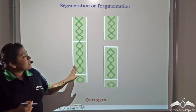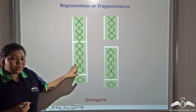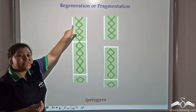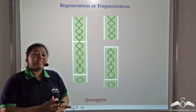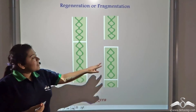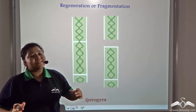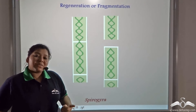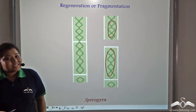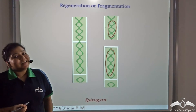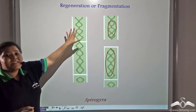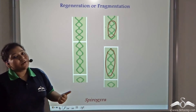Now look at this living organism known as spirogyra. This is one individual spirogyra which is living. If for any reason it gets bisected into two parts, the organism does not die. These two new separated parts keep on growing individually because they each have a part of the nucleus. This form of asexual reproduction is known as regeneration or fragmentation — that is, one organism fragments to form two new daughter organisms.